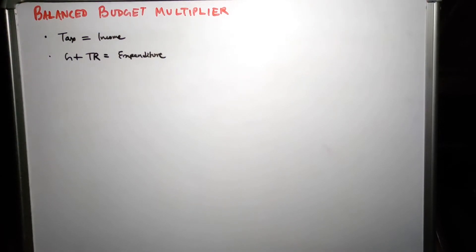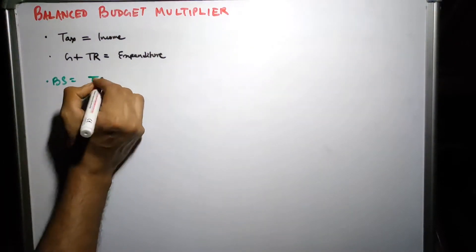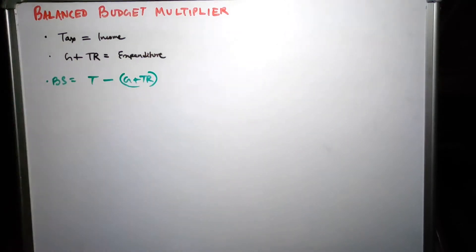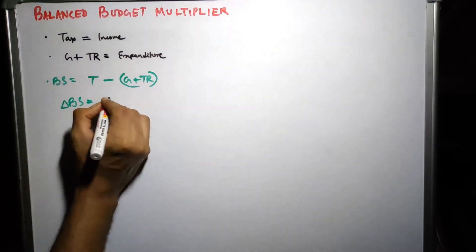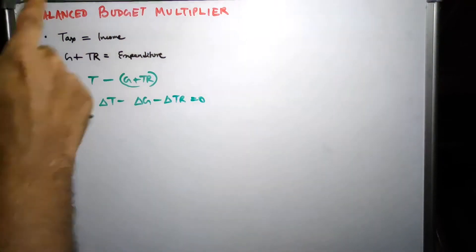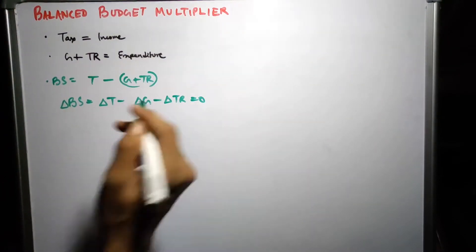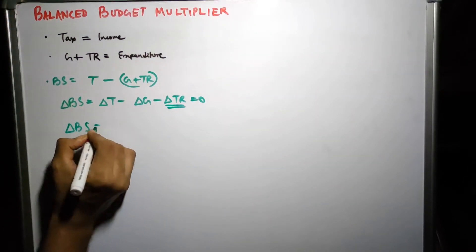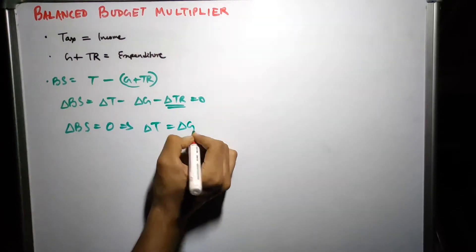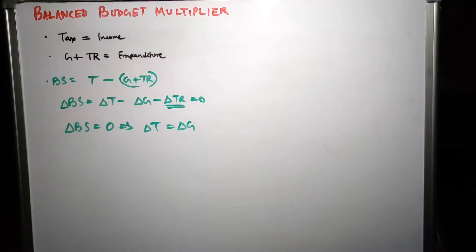Given these two, if we take into consideration the budget surplus of the government — budget surplus refers to the situation when income exceeds expenditure — we can say the government's budget surplus is T minus G plus TR. As stated, during the balanced budget the budget surplus situation between one equilibrium and another remains unchanged, so delta BS equals delta T minus delta G minus delta TR equals zero. Another important point: when the government implements such an expansionary fiscal policy it doesn't change transfer payments, so delta TR equals zero, which means delta BS equals zero implies delta T equals delta G — the amount by which the government increases G, it also increases T by an equivalent amount.